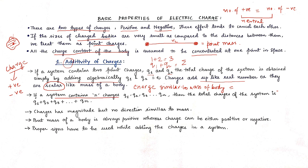Now, for a system containing n number of charges — where n is not definite — we have charges q1, q2, q3 up to qn. The total charge of the system is simply q1 plus q2 plus q3 up to qn.